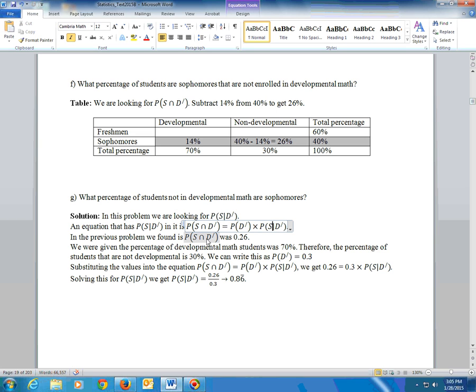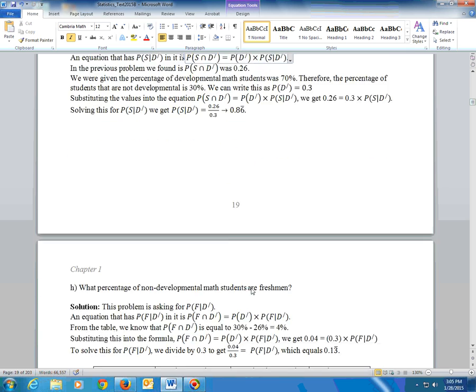In the previous problem we found this, that the probability of sophomore and non-developmental was 26%. So we know what this is. We also know what the probability of not being in developmental is. It's 30%. So we have this. We have that 0.26 right here is equal to 0.3 right there times this. Solve it by dividing and you'll get 0.86 right there. 0.86 repeating or 86.67% to the nearest hundredth of a percent.